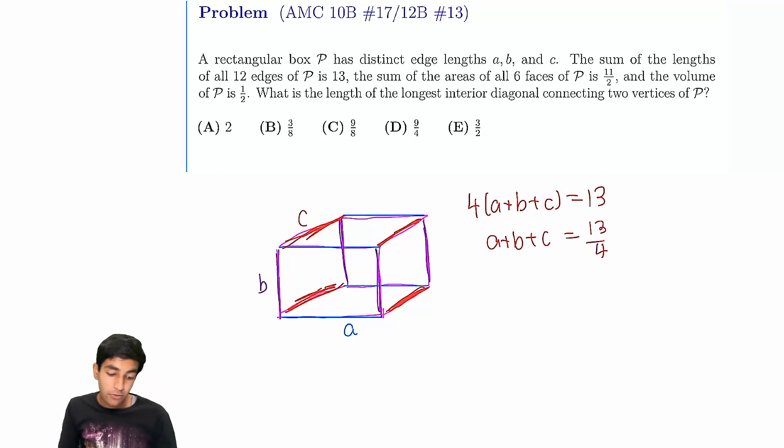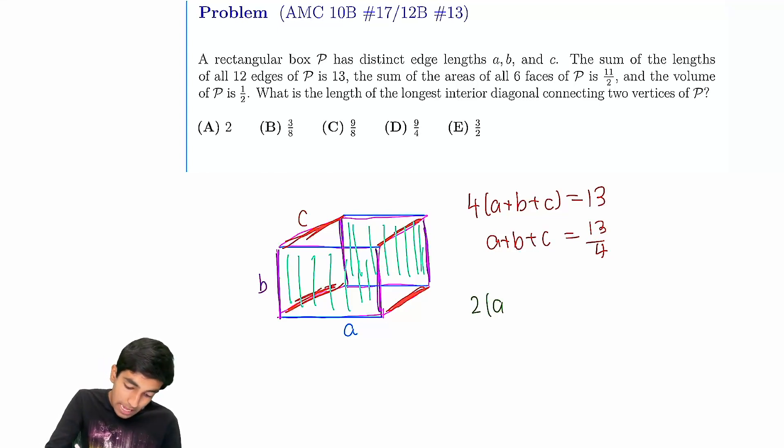The sum of all the areas of the six faces is 11/2. There are six faces, and notice this face has an area of ab, this green face. It's symmetric to the opposite face, which also has area ab. So in total, we have 2(ab + bc + ac) = 11/2. Therefore ab + bc + ac = 11/4.